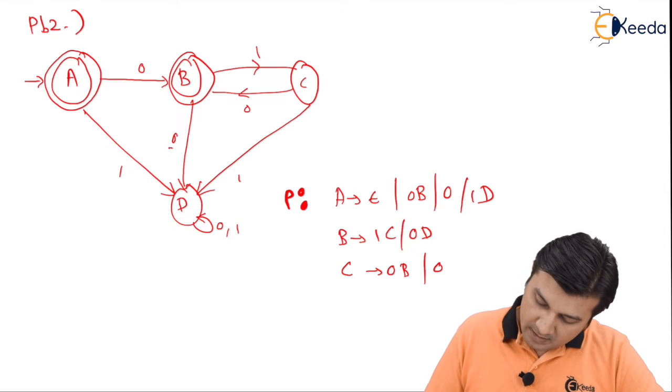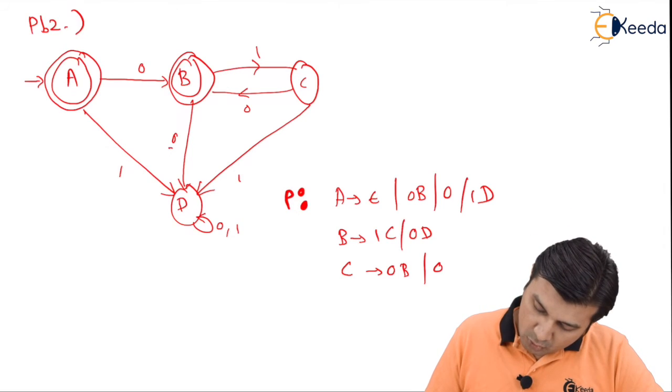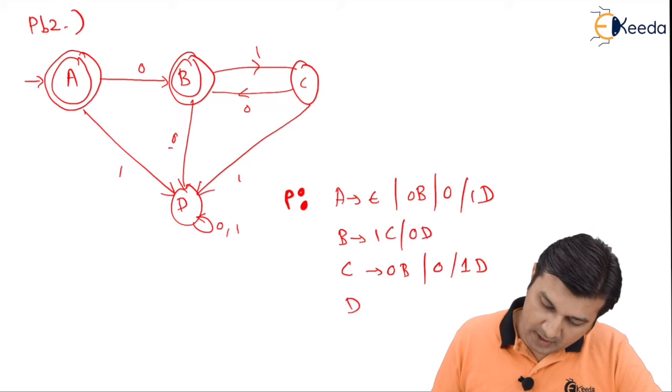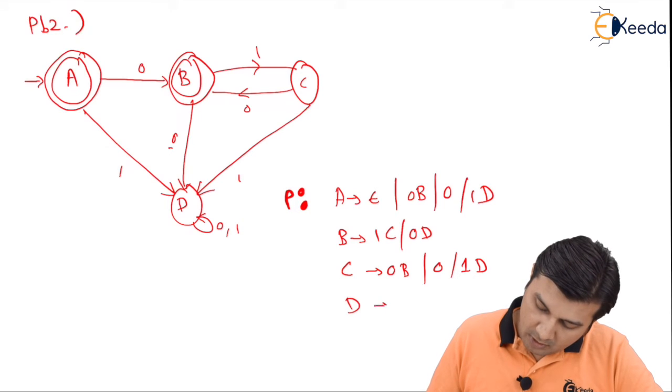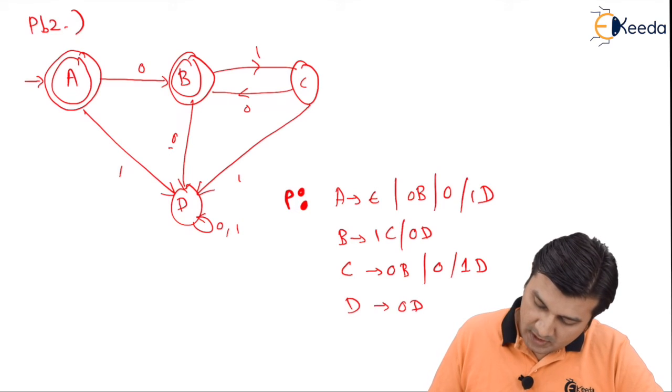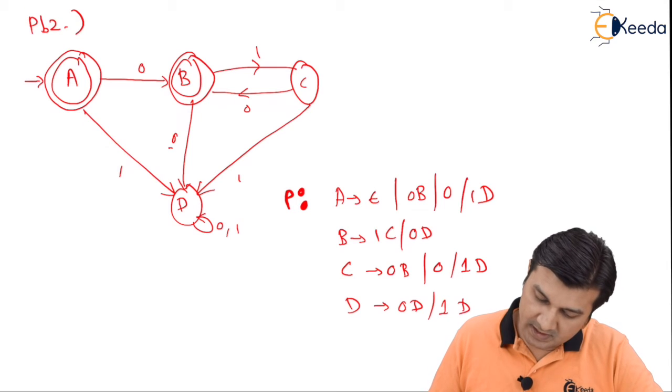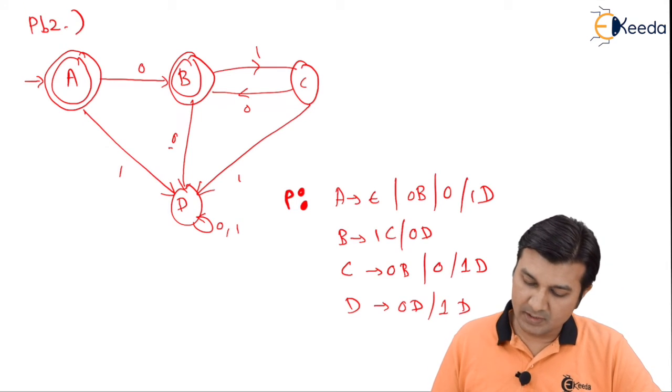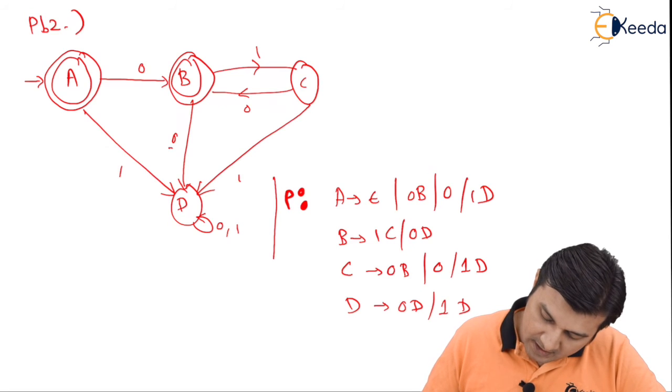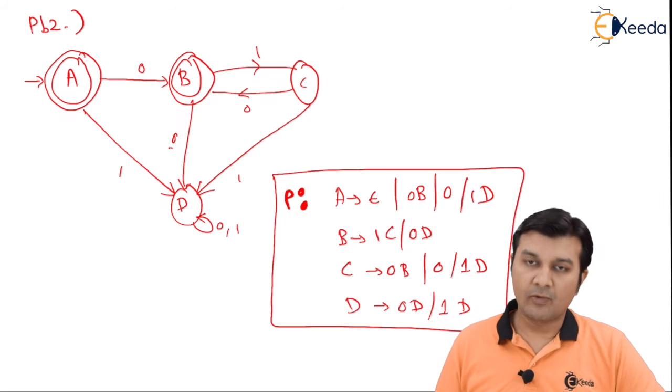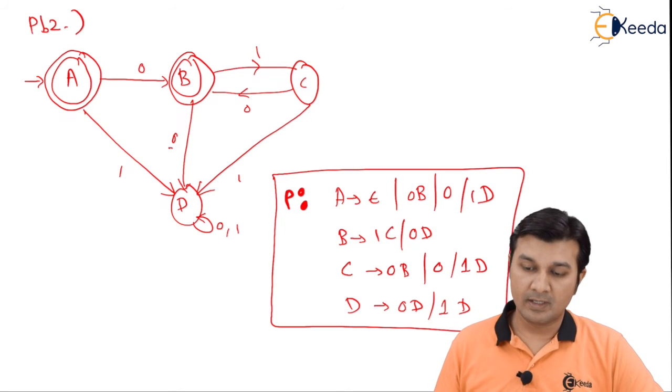C on 1 goes to D. The last one we are going to write for D. D on 0 goes to D, D on 1 goes to D. Since it is a cyclic transition, it is going to have it like this.